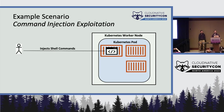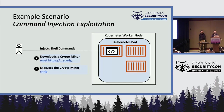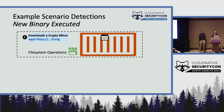I'm going to go through a simple scenario to illustrate what type of detections eBPF allows us to generate. This is a simple command injection vulnerability exploitation inside a web application running inside a container inside a pod. The attacker exploits this vulnerability to first download a crypto miner, then execute it, and then the crypto miner connects to a mining pool. In the first step, when the attacker downloads the crypto miner, using file system operations we detect that a new file has been downloaded at runtime — a kind of container runtime drift. At this point we don't generate a detection; we just store the state that this is a new file downloaded to the container at runtime.